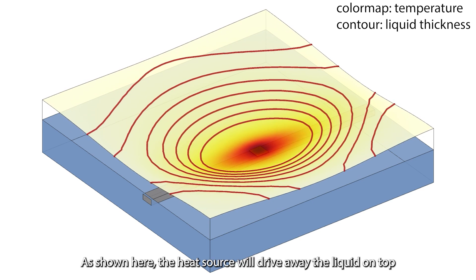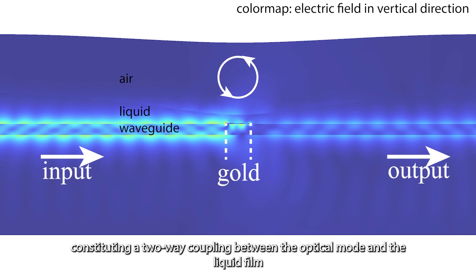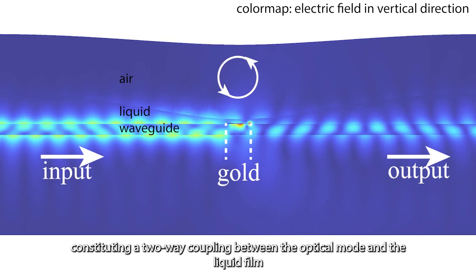As shown here, the heat source will drive away the liquid on top. The change of the liquid shape will in turn affect the properties of the optical mode in the waveguide, constituting a two-way coupling between the optical mode and the liquid film.